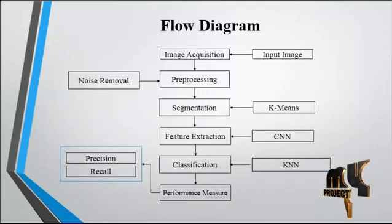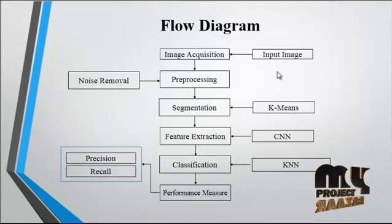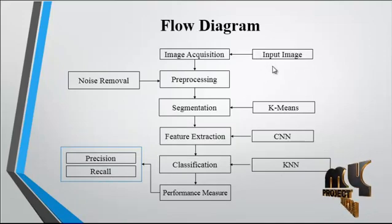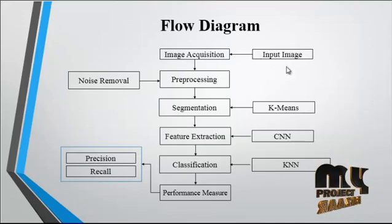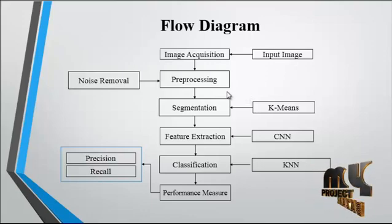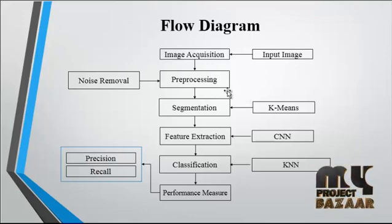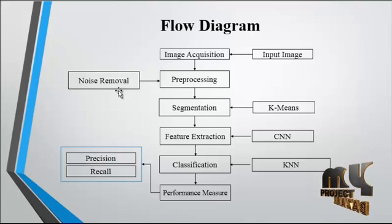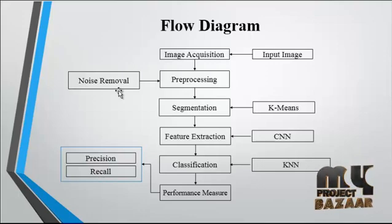Now we are going to discuss the flow diagram for the process. First, the input image is taken from the dataset, which consists of several species of animal images. After acquiring the image, pre-processing is carried out. In the pre-processing step, resize and noise removal are performed. In the resize step, the image is converted to an aspect ratio of 256x256, meaning the number of rows and columns will each be 256.